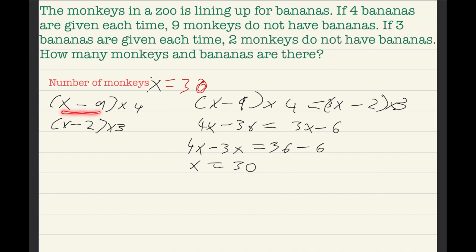So now I'm going to replace the X with 30, and I'm going to do it in orange. So, 30 minus nine times four, and 30 minus two, then times three. So, now I'm going to do 30 minus nine times four. 30 minus nine equals 21, then times four equals 84. So, then 30 minus two equals 28, then times three equals 84.